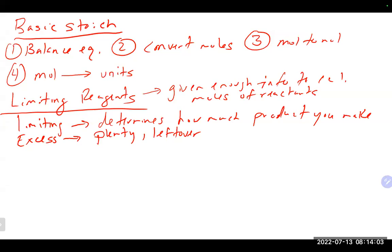There are multiple ways to solve limiting reagent problems. One common way is to do two separate stoichiometry problems between each reactant and the product, figure out how much each one makes, and the one that makes the least amount of product is your limiting reagent — and that amount is also your theoretical yield. Another method is to do a stoichiometry calculation between both reactants to figure out if you have enough of one to completely use up the other, then compare to what you started with.